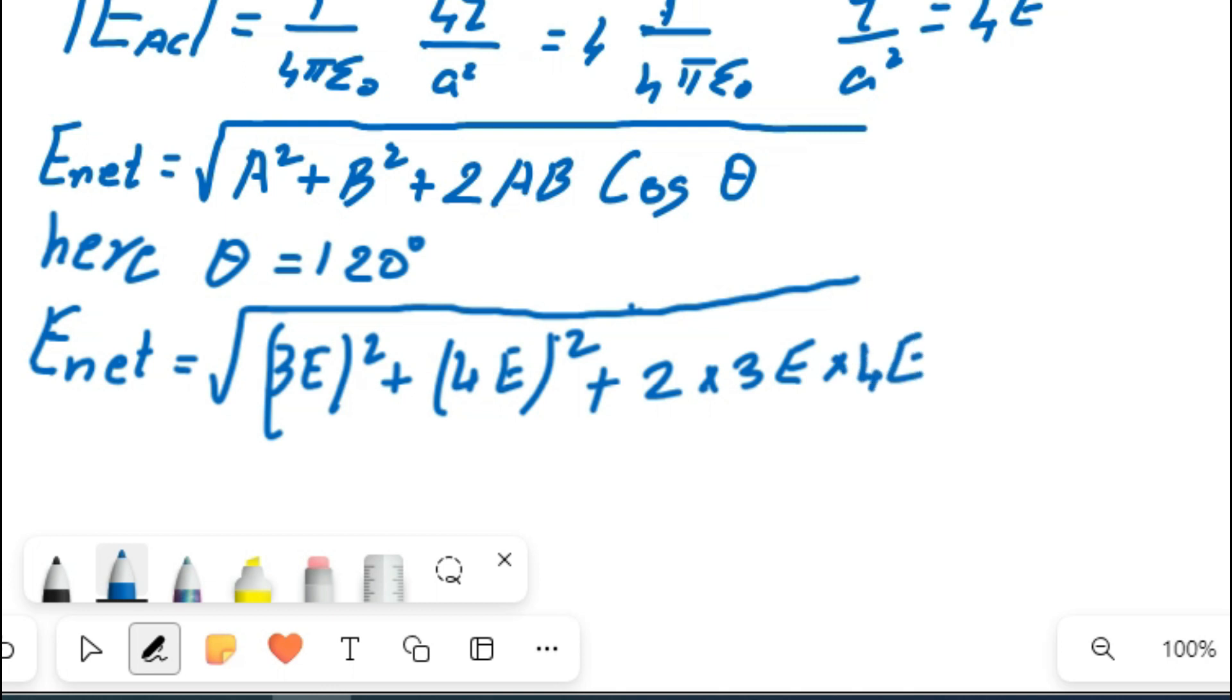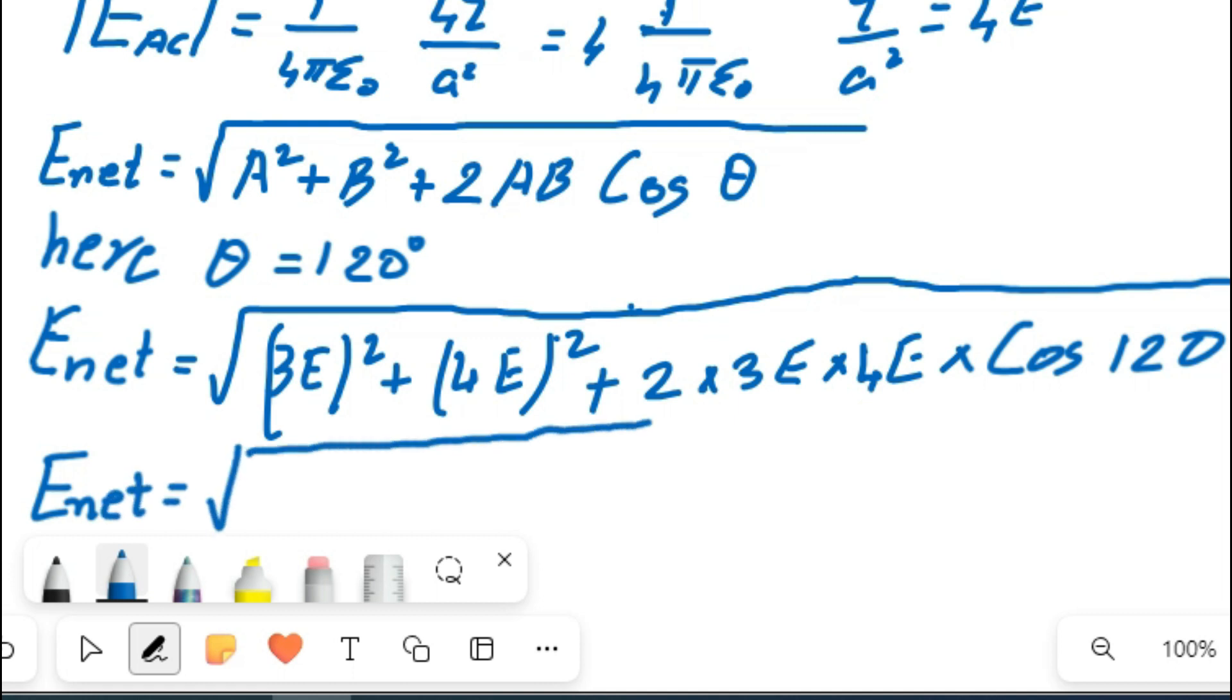And you remember cos 120, I shared with you in the previous video. The value of cos 120 we have to apply here. So E_net equals square root of, you know that 3E whole square will be 9E square, so I am going to write that one here: 9E square.